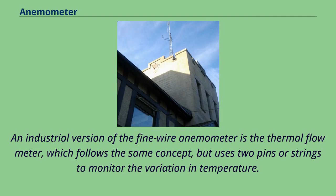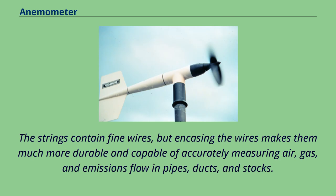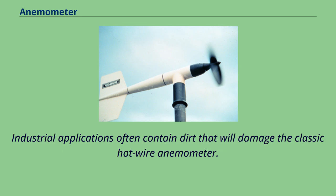An industrial version of the fine wire anemometer is the thermal flow meter, which follows the same concept, but uses two pins or strings to monitor the variation in temperature. The strings contain fine wires, but encasing the wires makes them much more durable and capable of accurately measuring air, gas, and emissions flow in pipes, ducts, and stacks. Industrial applications often contain dirt that will damage the classic hot-wire anemometer.